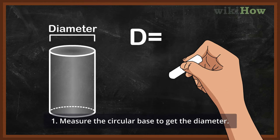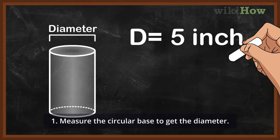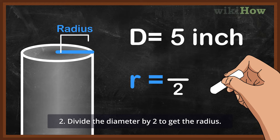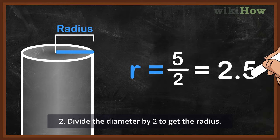1. Measure the circular base to get the diameter. 2. Divide the diameter by 2 to get the radius.